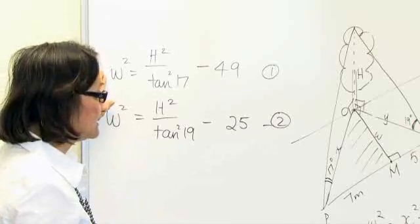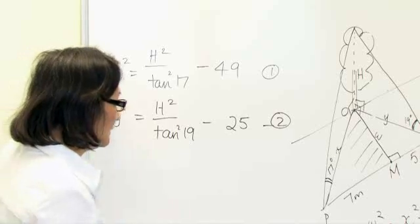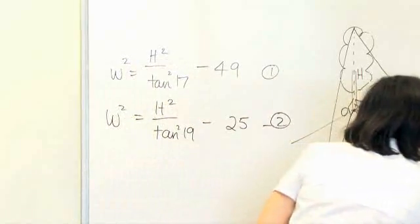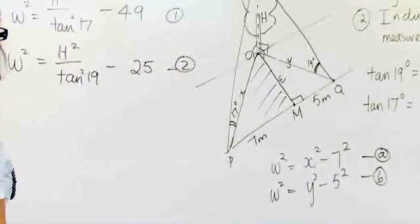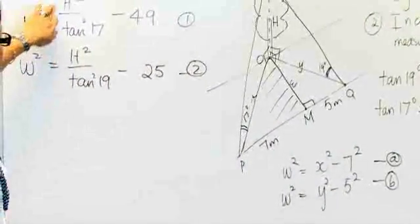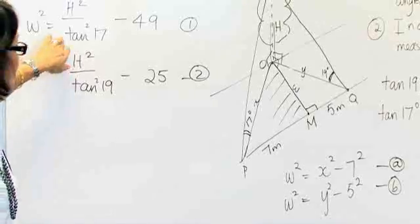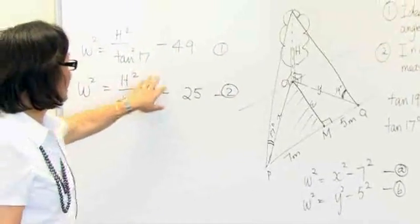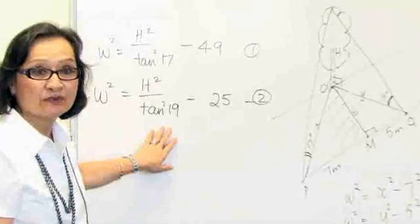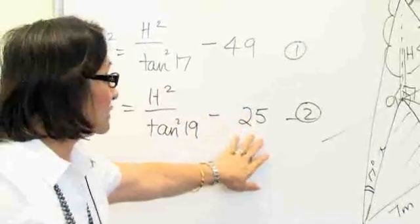Substituting for X and Y into the equations A and B, we get W squared equals H squared on tan squared 17, take away 49. And W squared equals H squared on tan squared 19, take away 25.